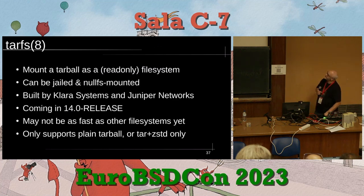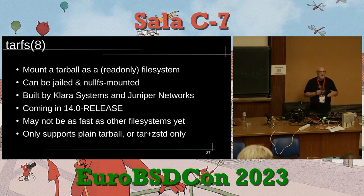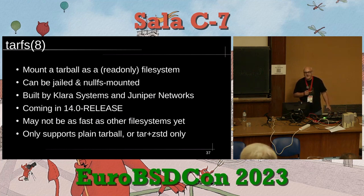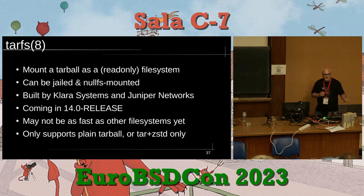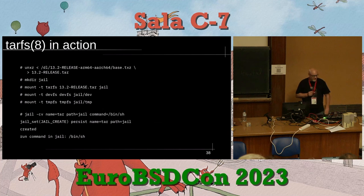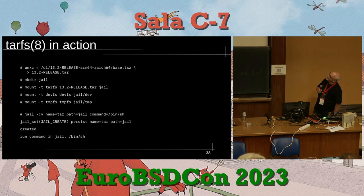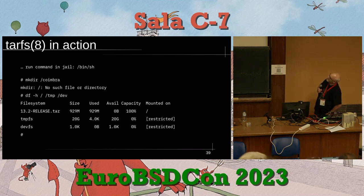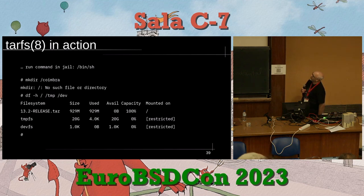Last but not least: TARFS, from Clara and Juniper, allows us to mount a tarball as a read-only filesystem. We can apply jails, nullFS mounts, all the things we're used to. It's coming in FreeBSD 14 release. It may not be as fast as other filesystems yet but that will improve. It only supports plain tarball, not GZip or XZ, but does support Zstandard compression. The workflow is simple: take the release tarball, unpack it, mount with TARFS, mount a devFS and tempFS for somewhere writable, and create the jail. The filesystem is read-only — attempts to create directories return an error — but temporary and dev filesystems are present. The goal for next year: applications deployed as tarballs via package, where redeployment is just `restart jail`.